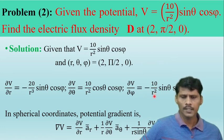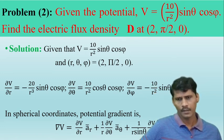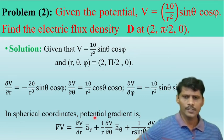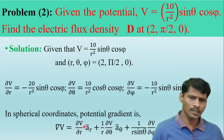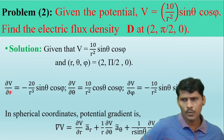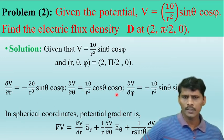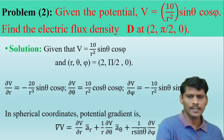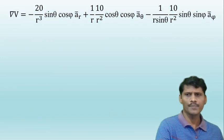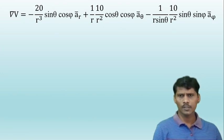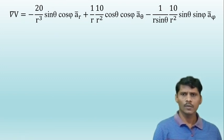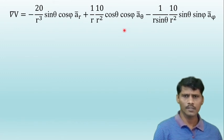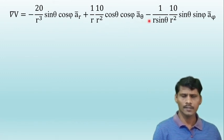Substituting ∂V/∂R, ∂V/∂θ, and ∂V/∂φ into the spherical gradient expression, we get: ∇V = (−20/R³·sinθ·cosφ)·aR + (1/R)·(10/R²·cosθ·cosφ)·aθ + (1/(R·sinθ))·(10/R²·sinθ·sinφ)·aφ.